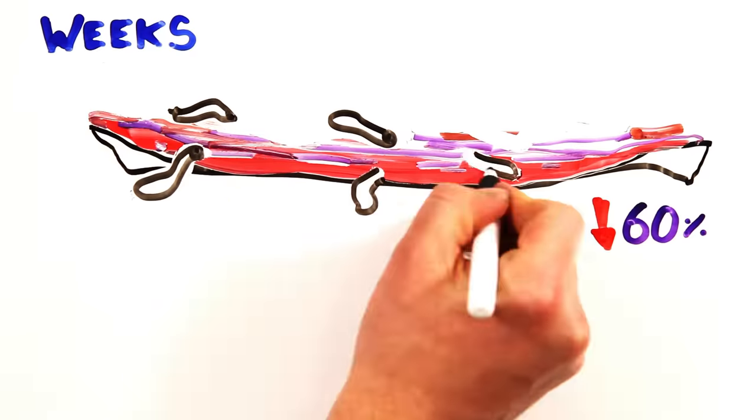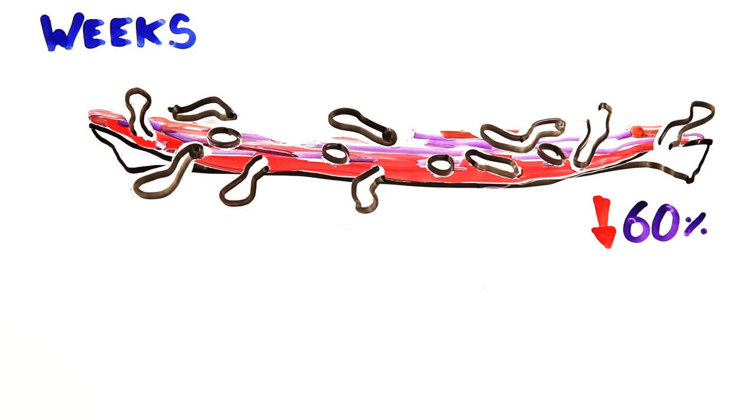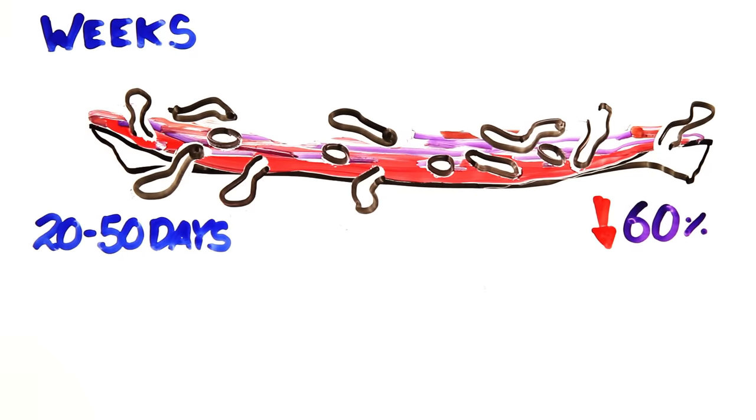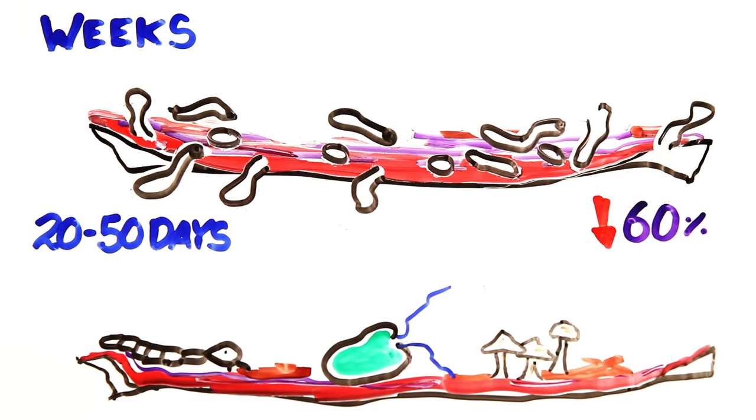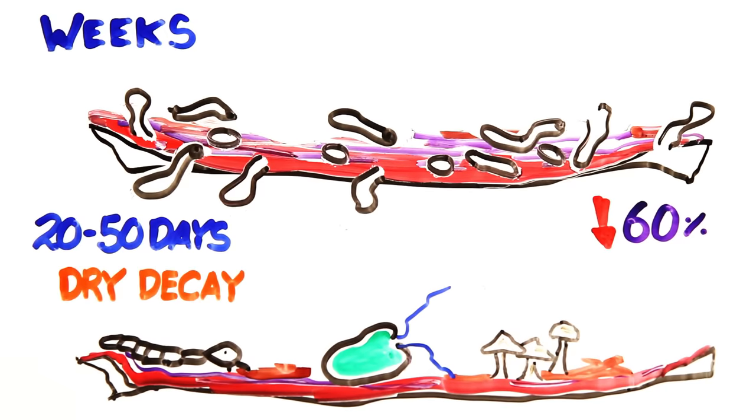This creates holes that allow decomposition fluids and gases to escape. Between 20 to 50 days, butyric fermentation begins, attracting beetle larvae, protozoa, and fungi. This process, known as dry decay, can take up to a year, but occurs faster in hotter temperatures.